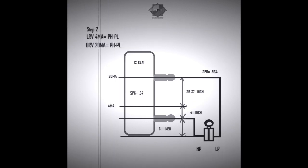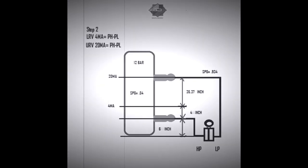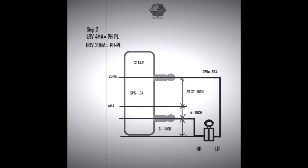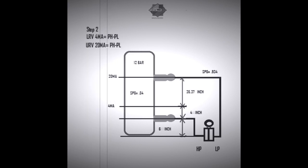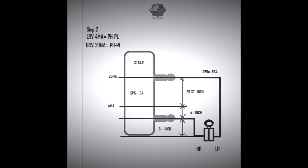The LP side tapping point 100 percentage level is 35.37 inches above the zero percentage level. Now we are going to find LRV and URV. The formula for LRV is PH minus PL, and the same formula is applicable for URV. The difference is LRV is used to calculate 4 milliamps and URV is used to calculate 20 milliamps.